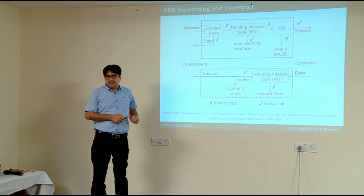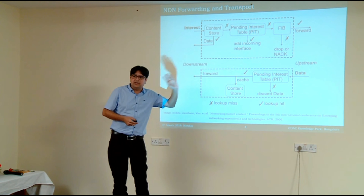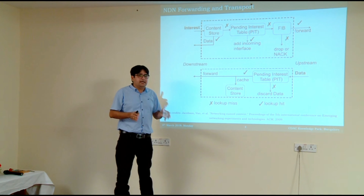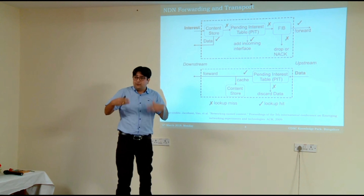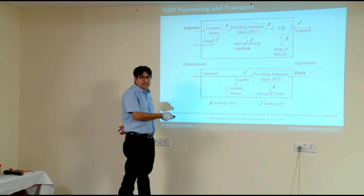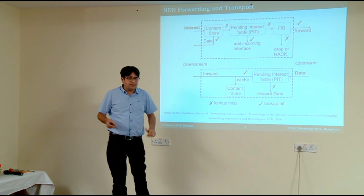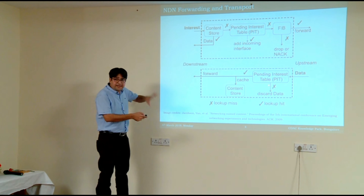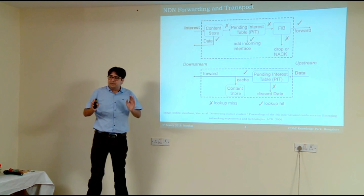In the reverse direction, FIB doesn't play a role — FIB is mainly for forwarding interest packets. Once the data is coming, I look into the PIT and find out how many people were waiting for this data. As many people as I find waiting, I send this same data to all of them. If nobody was waiting for this data, I drop it. You first find how many people are waiting for that data, send the data to all of them, and most importantly put a copy of that data in the content store. Now a big open research question: how large should be the size of the content store?